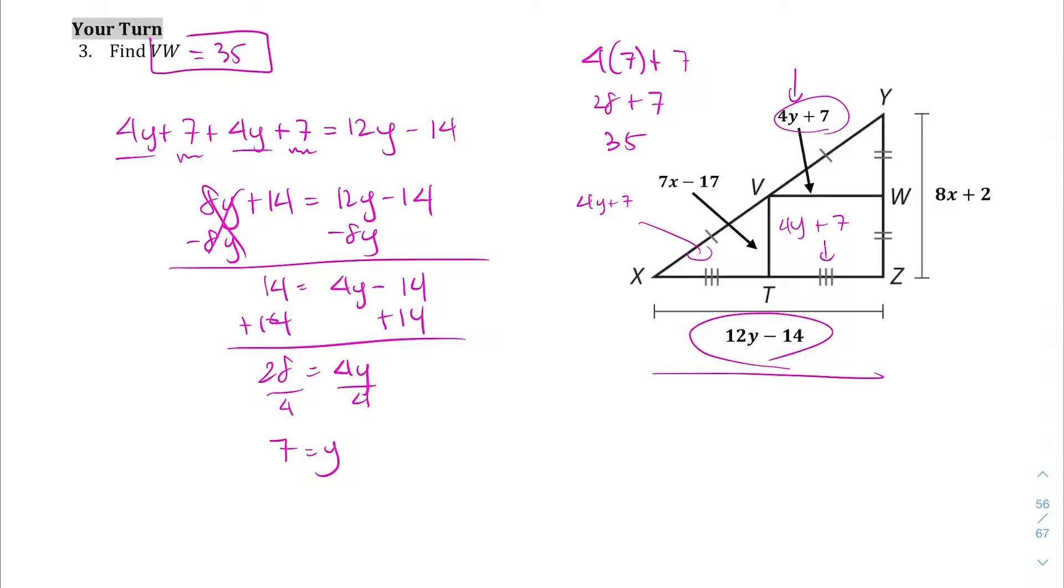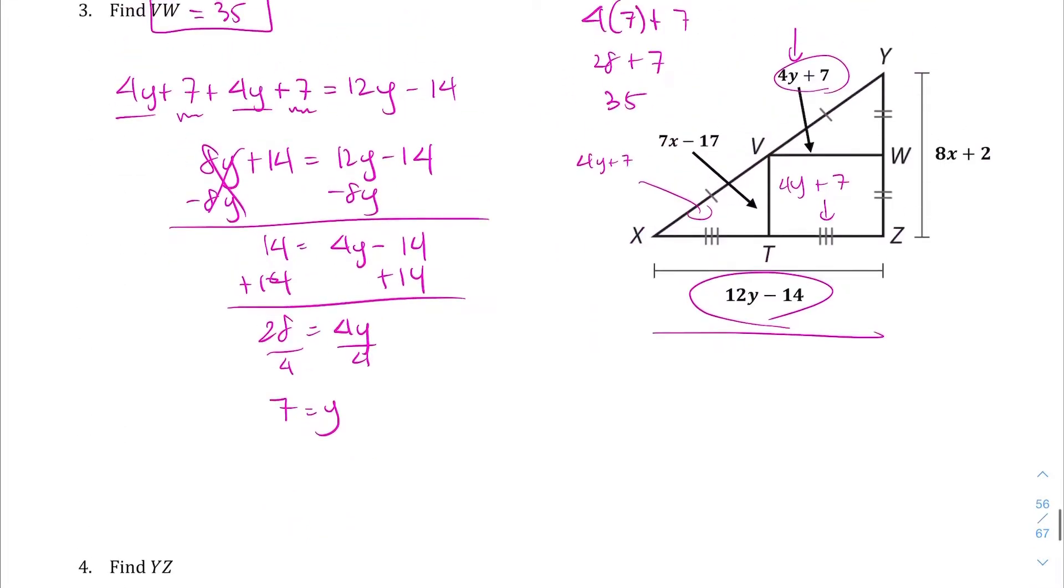And then let's do the next one, find YZ. Same diagram and same idea. We have VT right here, which is 7X minus 17, and if that's...